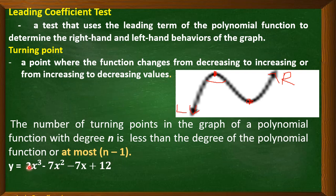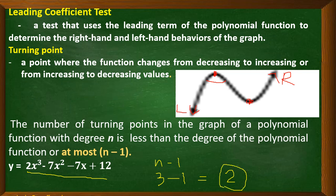For example, we have y = 2x³ - 7x² - 7x + 12. The degree is 3, so to determine the number of turning points we compute n minus 1, which is 3 minus 1 = 2. So the number of turning points is at most 2. If the function has no multiple root, the number of turning points is exactly 2. If there are multiple roots, it can be less than 2.